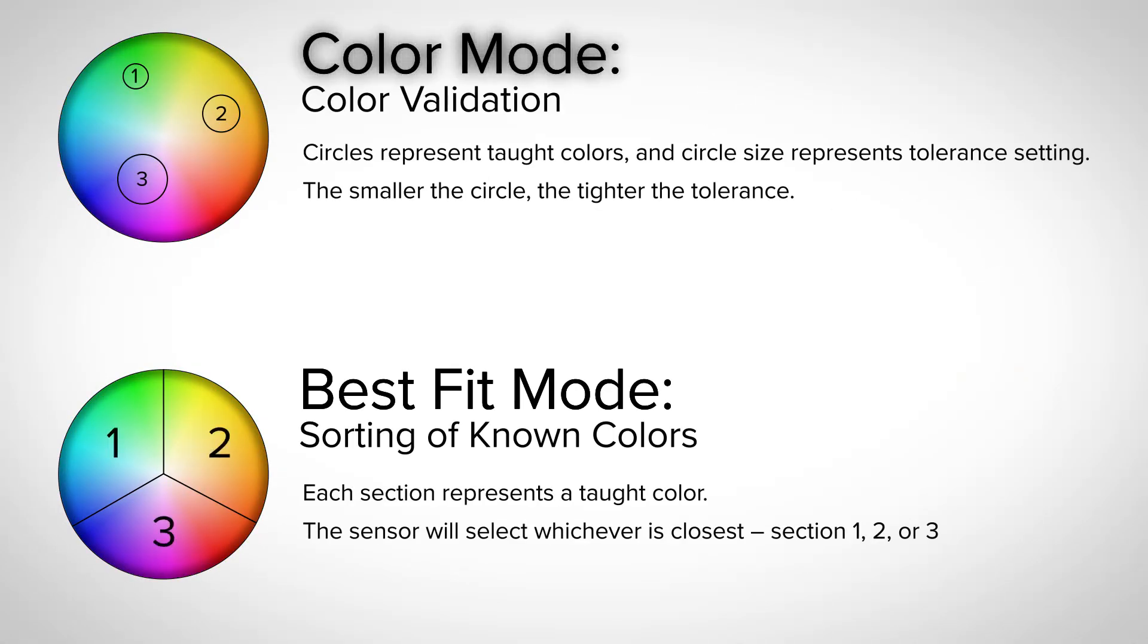The sensor offers two different operation modes, including color mode where a specific color is taught and a tolerance for variation of that color can be adjusted to ensure consistent product coloring, and best fit mode where the sensor is taught various colors and will always provide an output based on the color that most closely represents the taught conditions.